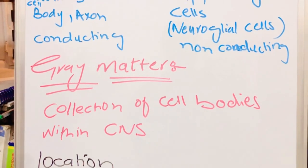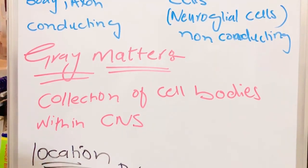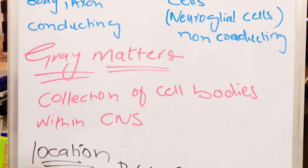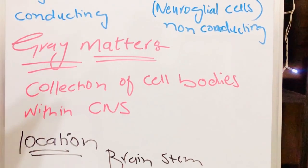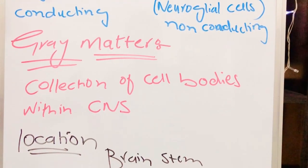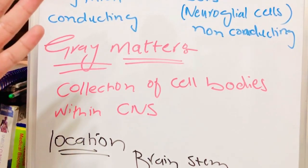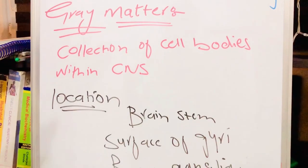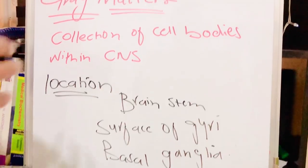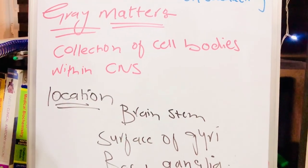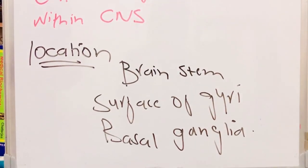Now we will talk about gray matter. Gray matter is the collection of cell bodies within the central nervous system. If the collection of cell bodies is outside of the central nervous system, we cannot call it gray matter — we will call them nerve fibers. This is the basic difference. Gray matter is present in different parts of the central nervous system, for example our brain stem.